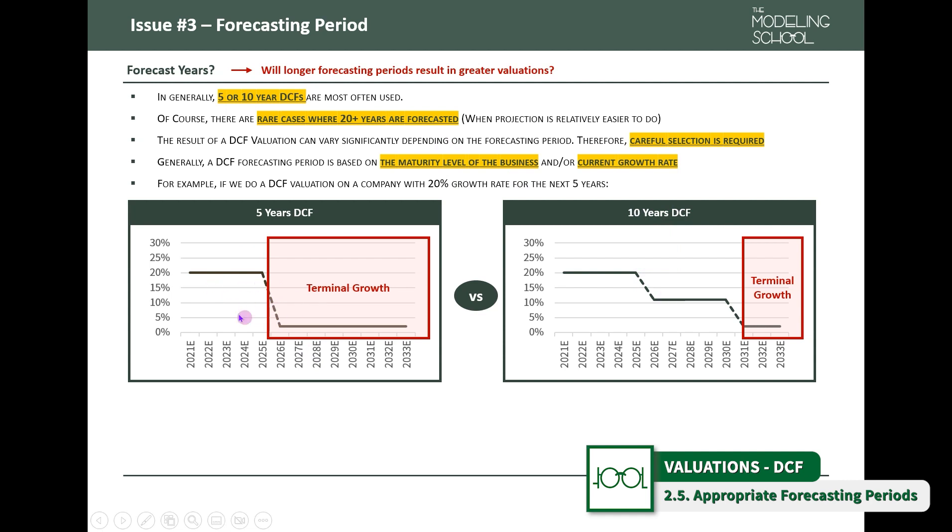But in most cases, five-year DCF works well. Let's say a company is growing at 5%. Even if the terminal growth rate drops down to 1%, it seems very natural. So in those cases, you have to use five-year DCF.